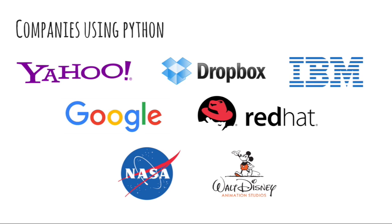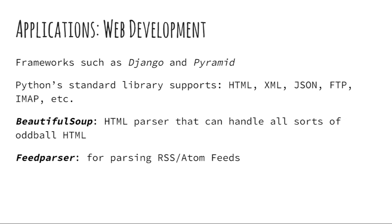Next, let's look at what Python is mostly used for. First, let's discuss the applications of Python in web development. Python has web frameworks such as Django and Pyramid, which make it easier to build web applications quickly with less code. Python's standard library supports many internet protocols, which include HTML, XML, JSON, FTP, and IMAP. BeautifulSoup is a toolkit for dissecting a document and extracting what you need — it converts incoming documents into Unicode and outgoing documents to UTF-8. FeedParser can be used for parsing RSS and Atom feeds.